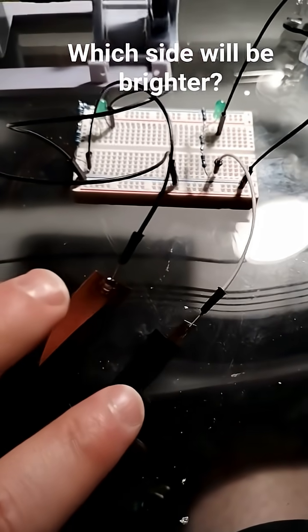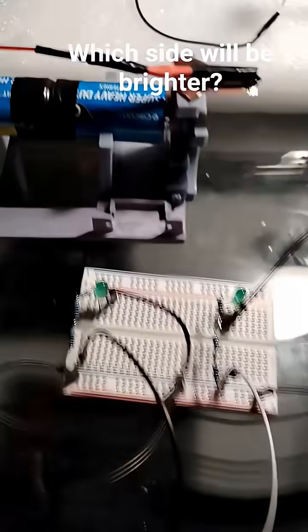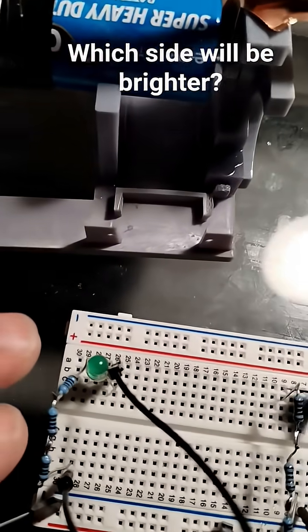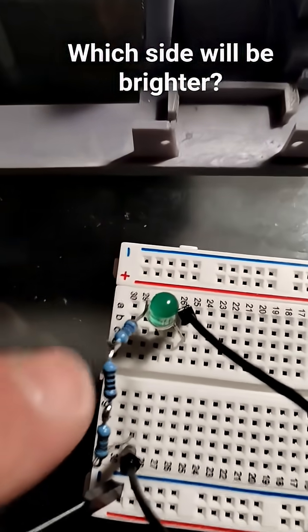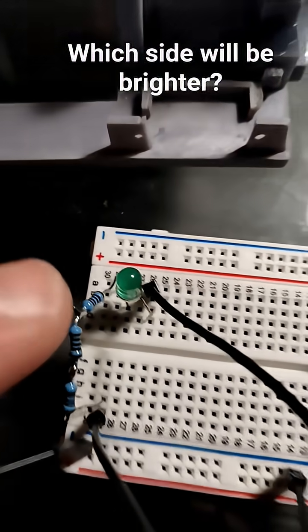Which side will be brighter? Both sides are receiving 2.98 volts of electricity. The side on the left LED has three resistors, each are 100 ohms, soldered together.